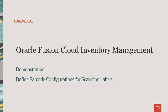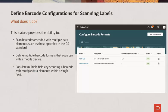This demonstration shows you how you can use defined barcode configurations for the scanning labels feature to enhance your business. This feature allows you to scan barcodes encoded with multiple data elements, such as those specified in the GS1 standard. You can define multiple barcode formats that you scan with a mobile device. You can also define how to parse the data when scanned for a specific field within the mobile page, and populate multiple fields by scanning a barcode with multiple data elements within a single field.